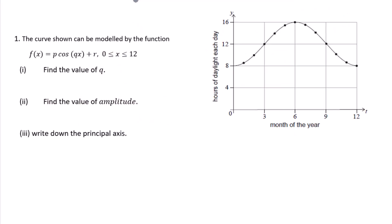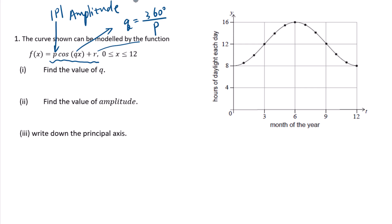Let's go to Question 1. The curve shown can be modeled by the function f(x) equals P·cos(Qx) + R, where x is greater than or equal to 0 and less than or equal to 12. Find the value of Q. From the given graph, we can figure out the coordinates of the maximum point: (6, 16), and the minimum point: (0, 8).